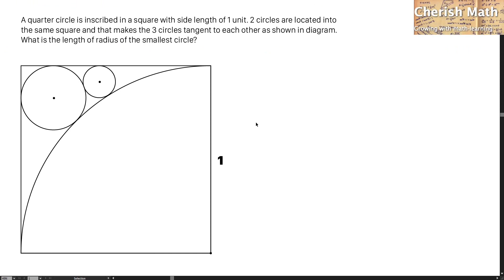Say hi from Cherish Math. This is the question. A quarter circle is inscribed in a square with side length of one unit. Two circles are located into the same square and that makes the three circles tangent to each other as shown in diagram.